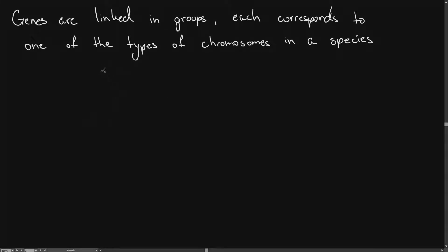What we'll be looking at in this video is that genes are linked in groups. Each corresponds to one of the types of chromosomes in a species. Each of these genes occupies a specific position, and the position a gene occupies is called the locus.